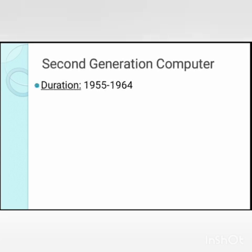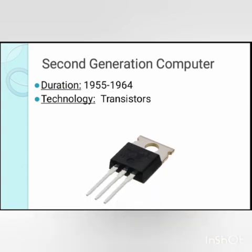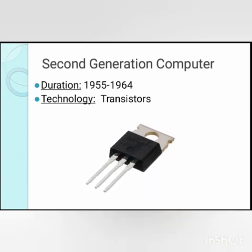1955 to 1964 is the period of second generation computers. They were based on transistors instead of vacuum tubes. They were smaller, used less electricity, and were more reliable.